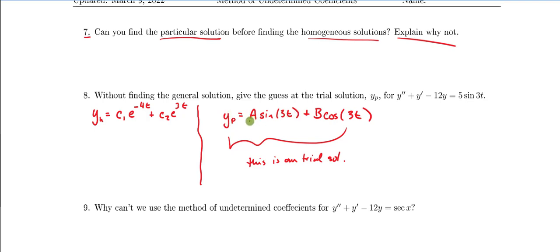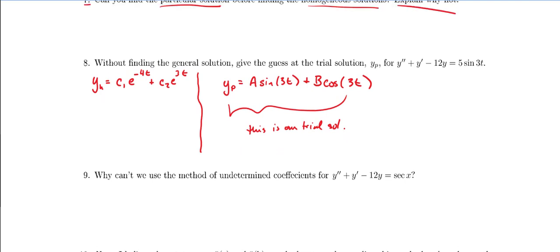We also need a B·cosine(3t) because it's a derivative term, and there's a potential that our particular solution may need a cosine value. It might be that we find A is five and B is zero, or maybe A is zero and B is five, or maybe both coefficients are non-zero — we'll just have to wait and see. Now, this method of undetermined coefficients does not apply to all non-homogeneous linear ODEs. Pause the video and think about why we cannot use this method for this particular forcing function.